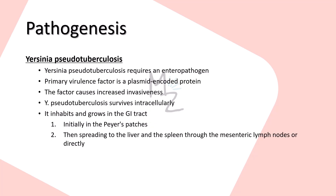Yersinia pseudotuberculosis requires an enteropathogen; its primary virulence factor is a plasmid-encoded protein that causes increased invasiveness. It survives intracellularly and inhabits and grows in the GI tract — initially in the Peyer's patches, then spreading to the liver and spleen through the mesenteric lymph nodes or directly.